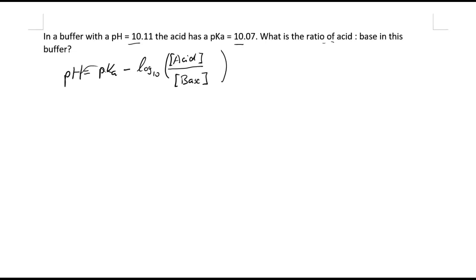So how can we do that? We bring the log term to the other side and put the pH to the right hand side, and we get log of acid concentration divided by the base concentration equals pKa minus pH.